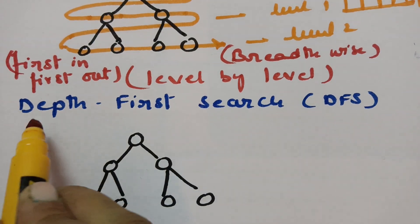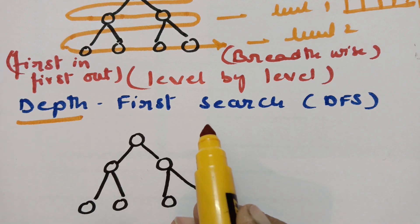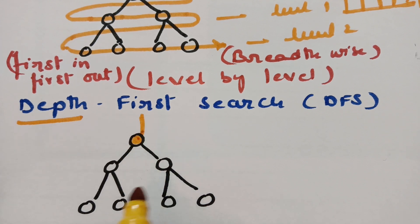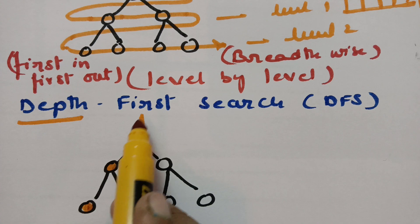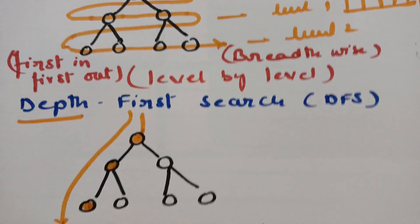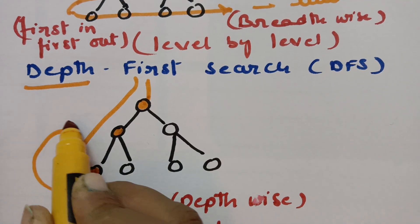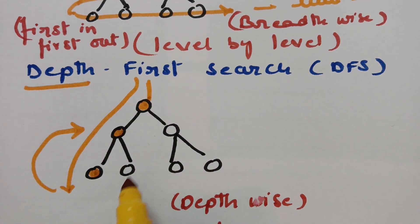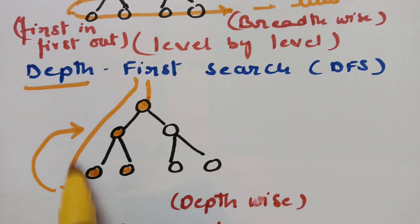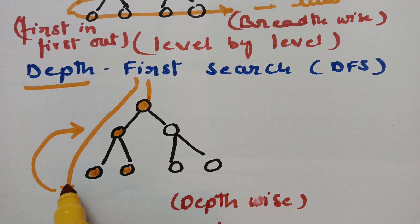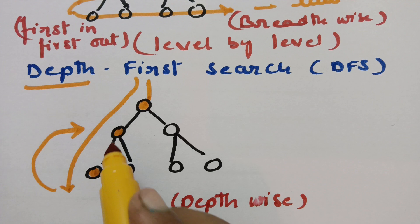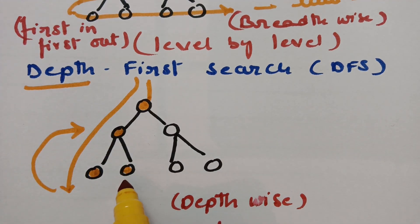The next one is Depth First Search. The name itself indicates that we are going through deep depth. First I will visit a vertex, explore it, and find a path going in the deep way. I will enter deep, and if there is no path, I will take a backtracking and find another route. So DFS means we go deep inside unless and until we find a path. If there is no path, we take backtracking and again find a route going deep into the graph. This method is also called the backtracking method.